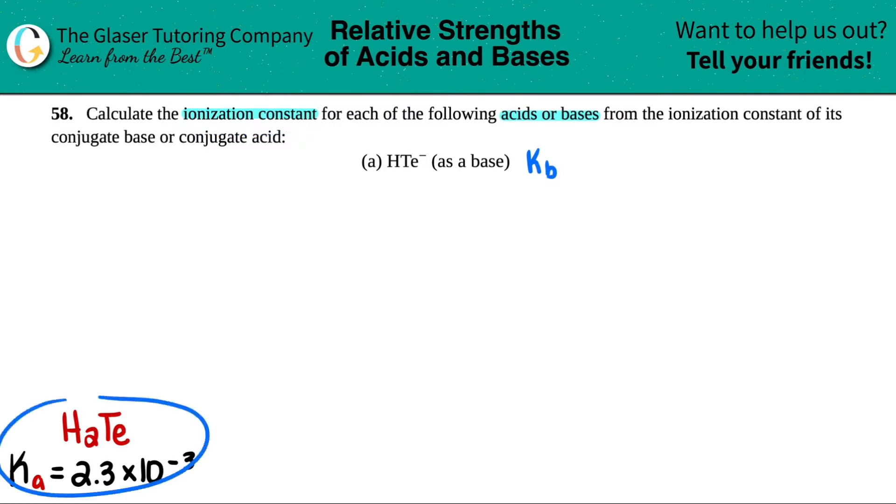Now I went in the back of the textbook to find out what the conjugate acid of HTE- was. And a conjugate acid is always one hydrogen more. So it'd be H2TE. And that Ka value is 2.3 times 10 to the negative third.